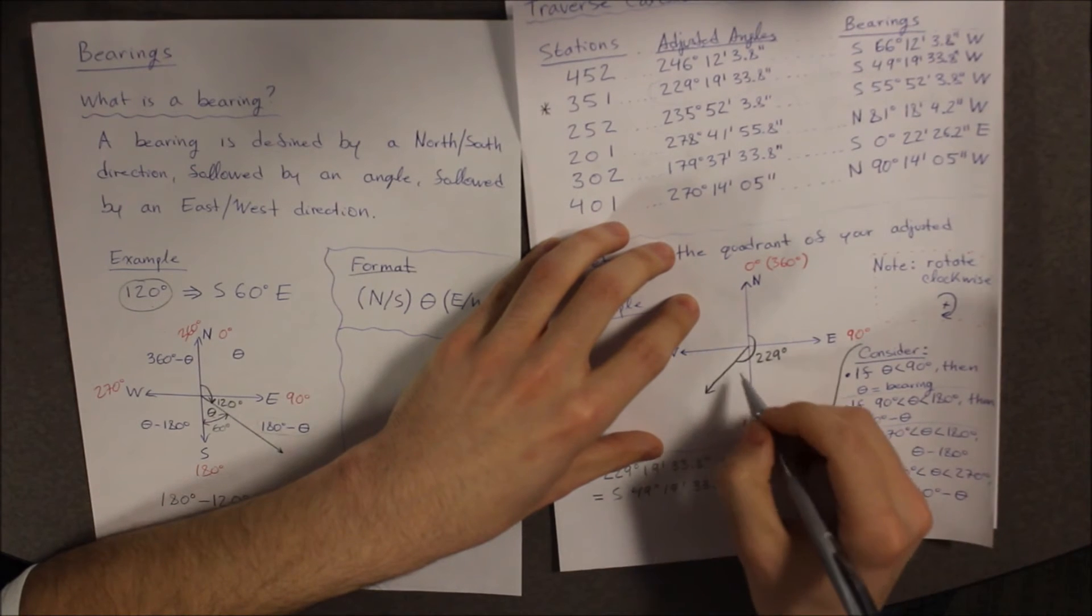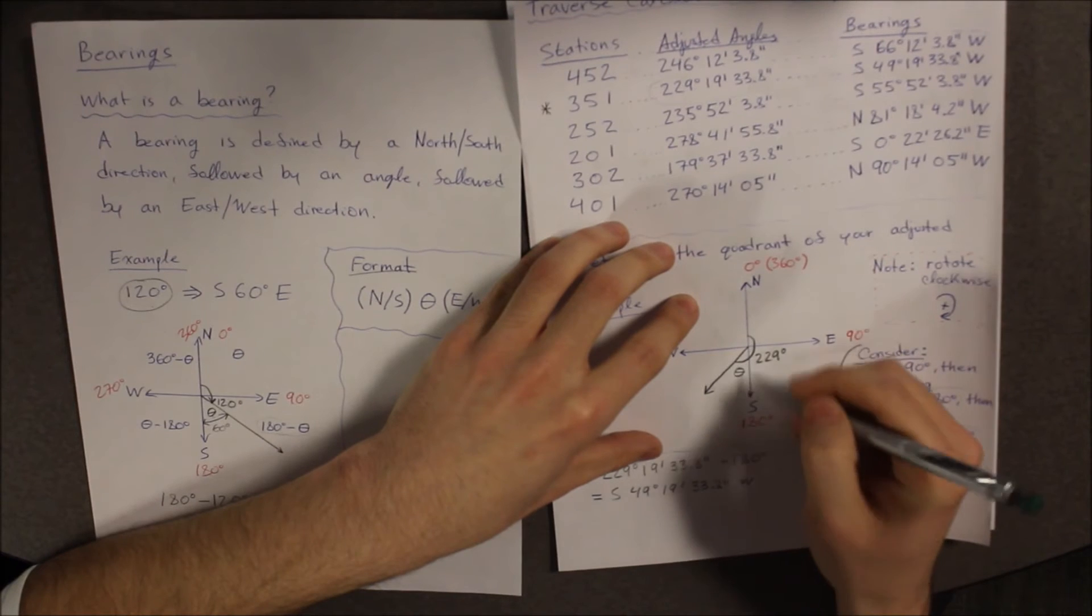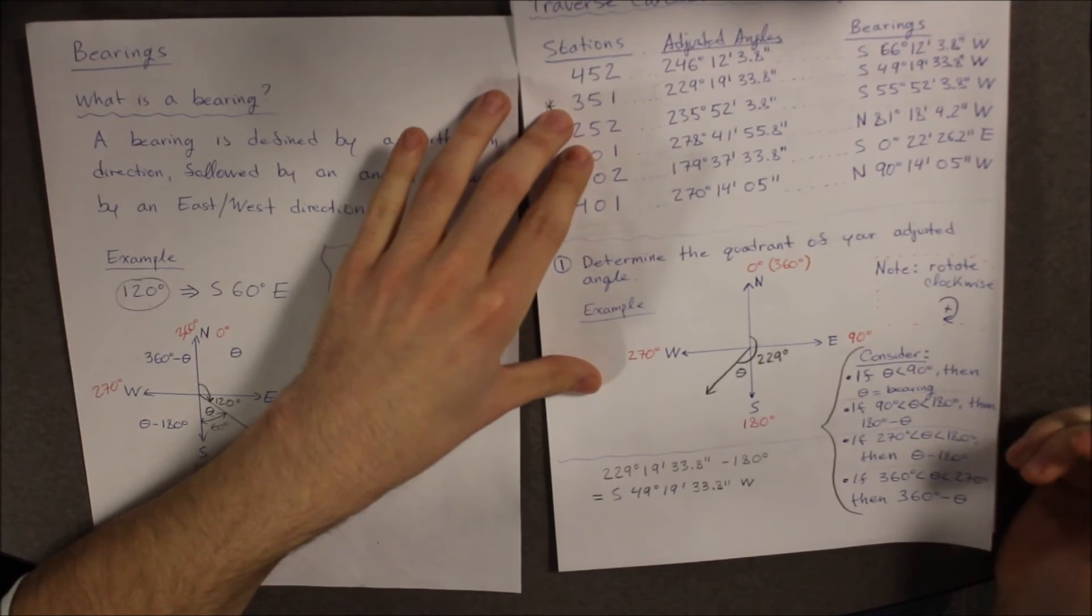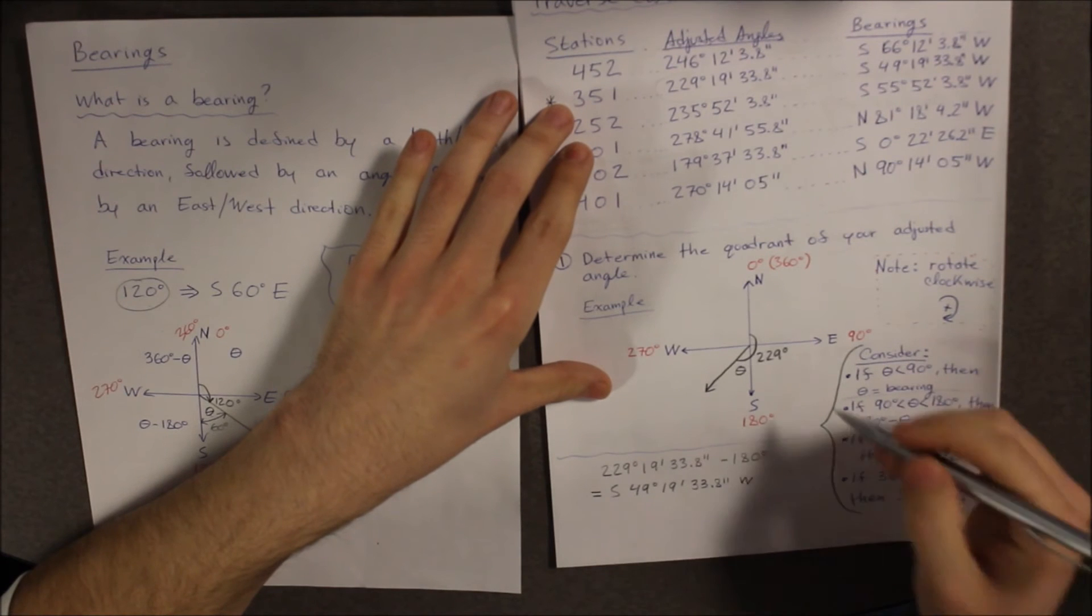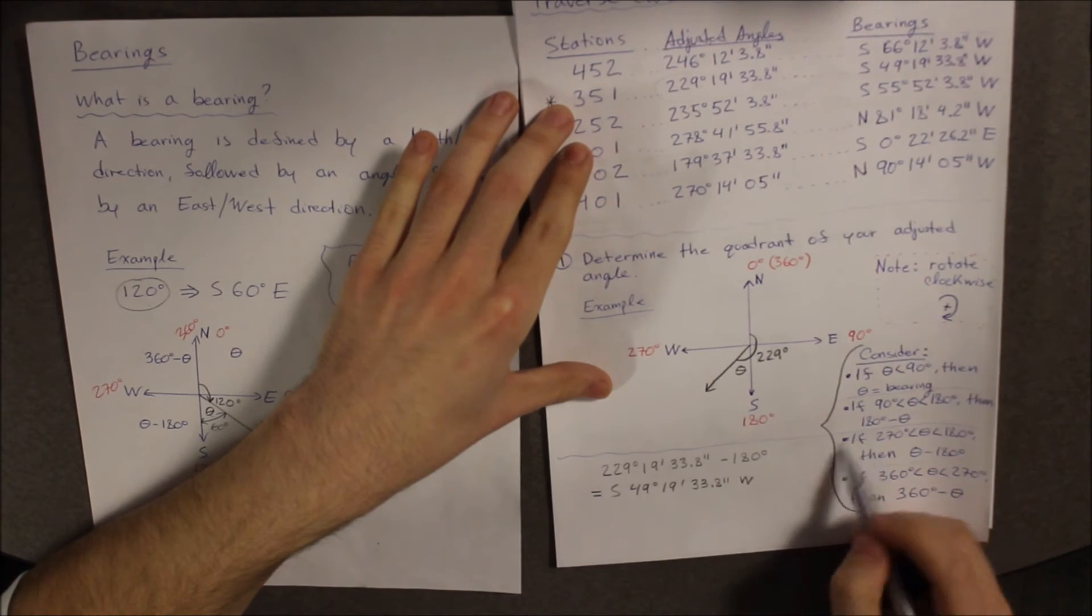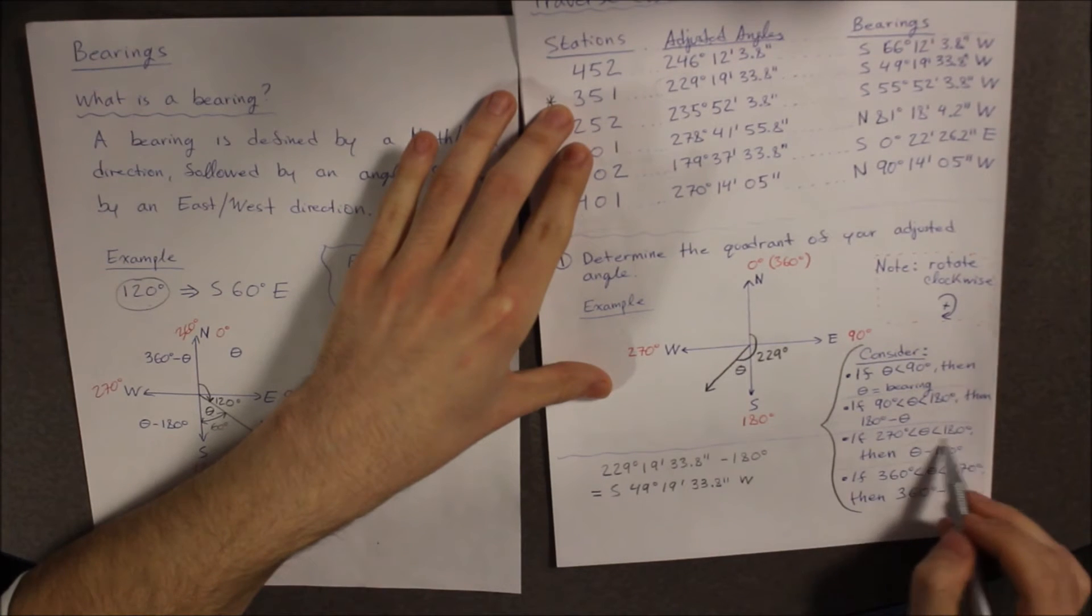So the angle that you are looking for is the angle that resides right here between your angle and the 180 degrees. Now, take a look at this. Our angle is between 270 and 180 degrees. Therefore, we must use this condition right here.